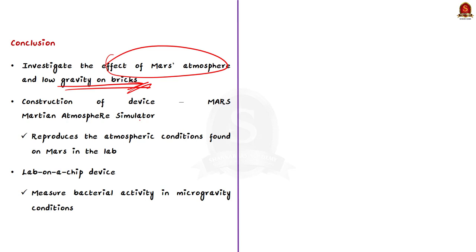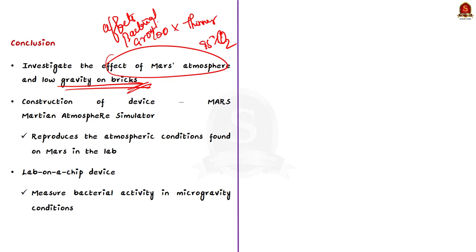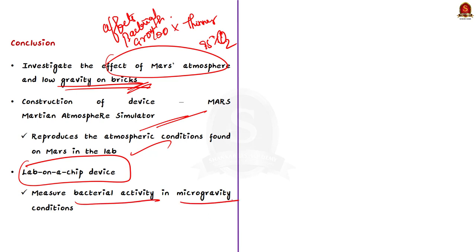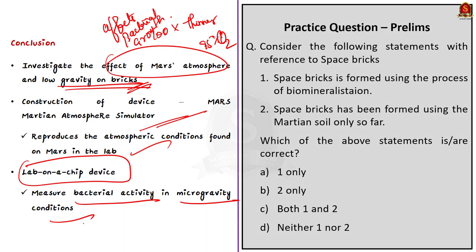The Martian atmosphere is 100 times thinner than Earth's atmosphere and contains over 95% carbon dioxide, which may significantly affect bacterial growth. The researchers have constructed a device called Martian Atmosphere Simulator, which consists of a chamber that reproduces the atmospheric conditions found on Mars in the lab. The team has also developed a lab-on-a-chip device that aims to measure bacterial activity in microgravity conditions. This kind of awareness on science topics is very much useful for attending prelims-type questions — just awareness itself is enough to answer even if you do not know the depth of the topic.